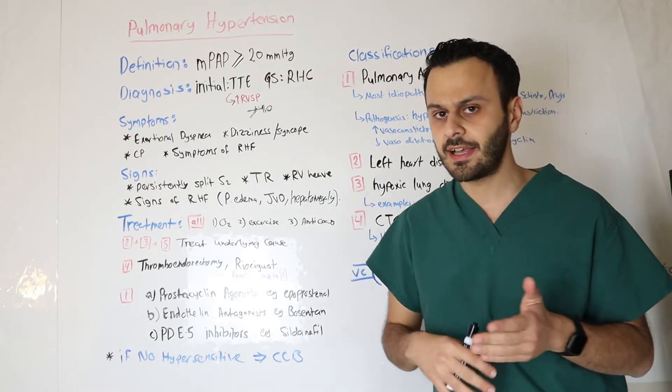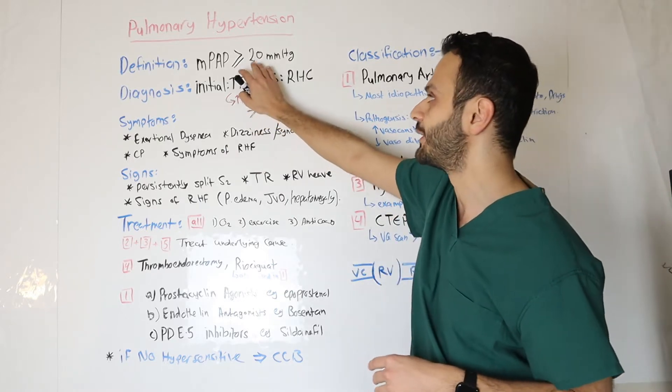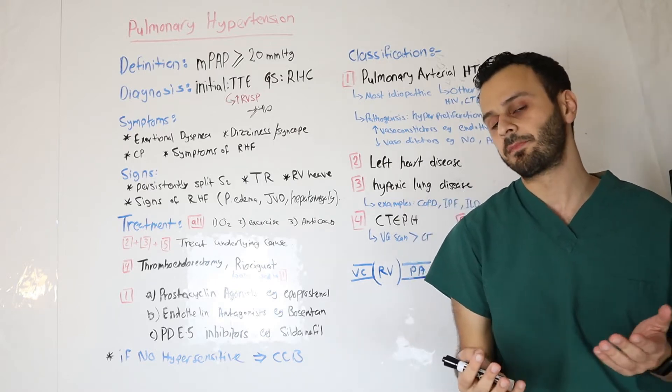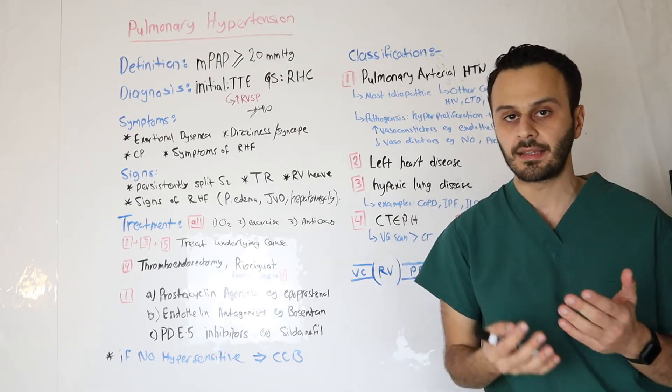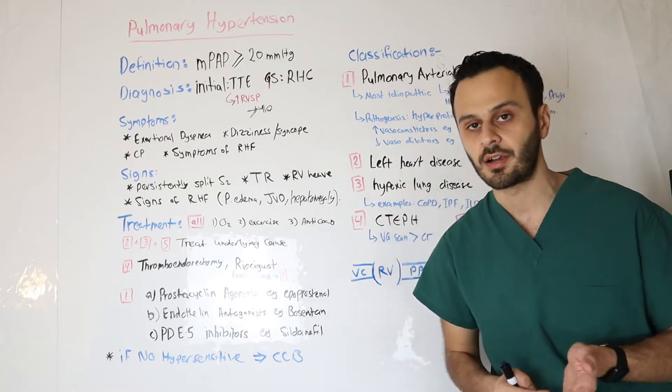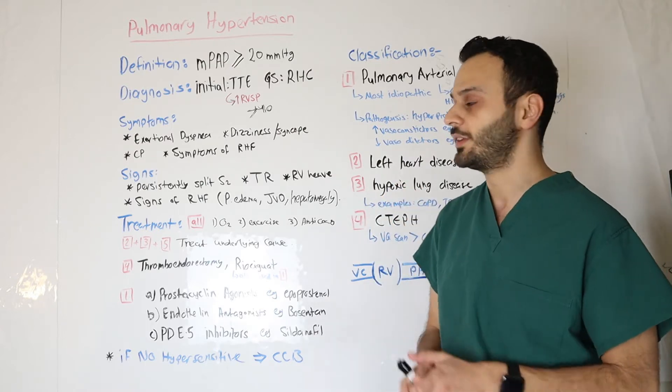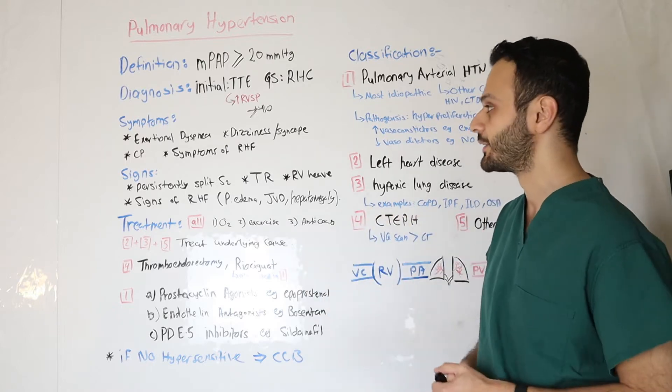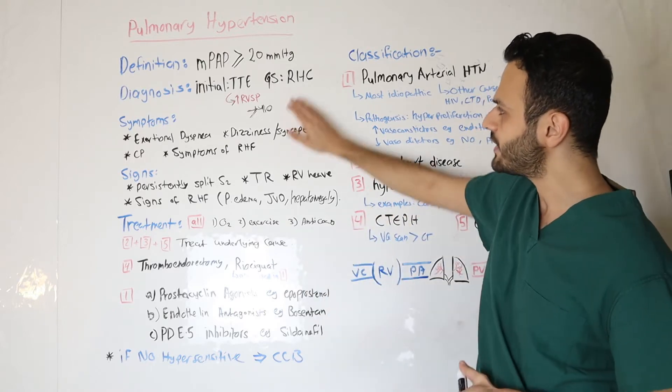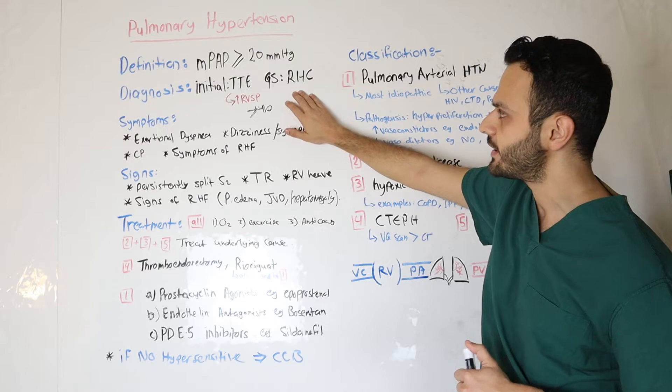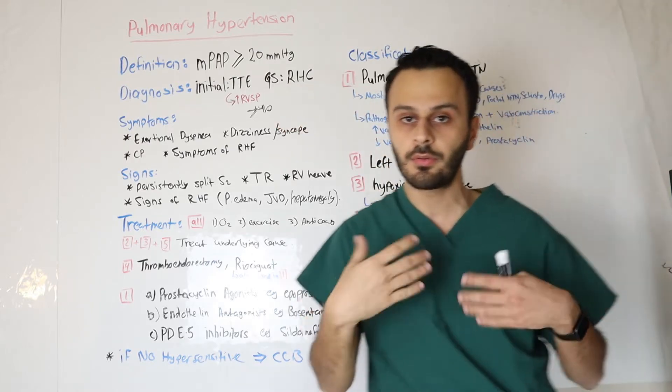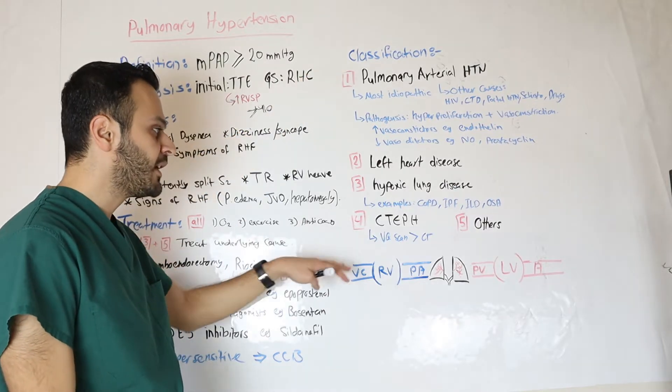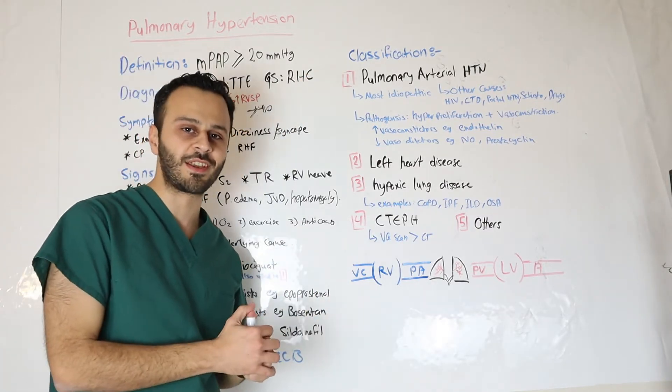Now the older guideline used to say pulmonary hypertension is 25 or above, but latest studies, they investigated that, and by reducing the cutoff to 20, they were able to detect more and more cases of pulmonary hypertension, especially in its milder form. Now once you establish the diagnosis, you want to think about what is the cause. And through the cause, you want to classify from class 1 to class 5, and that's the next segment of this video.